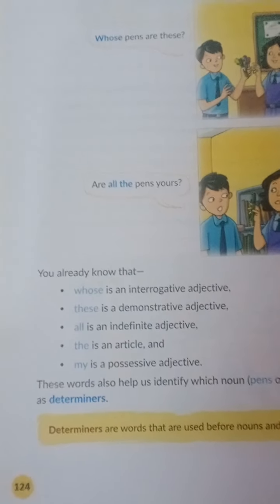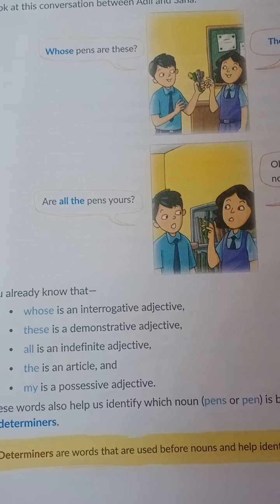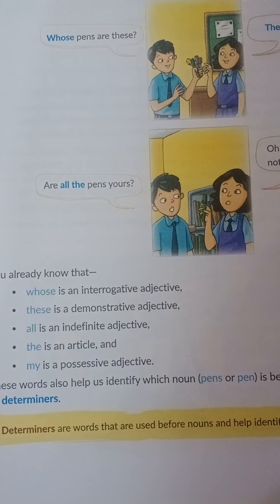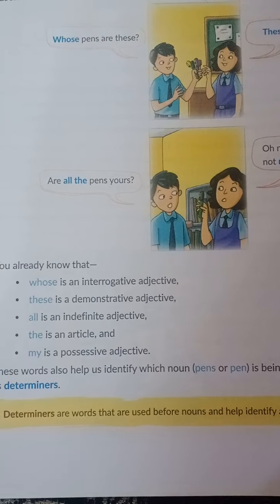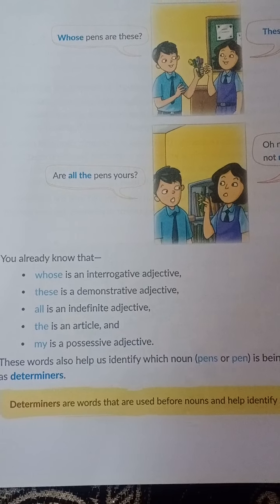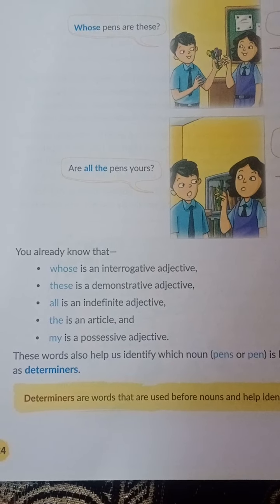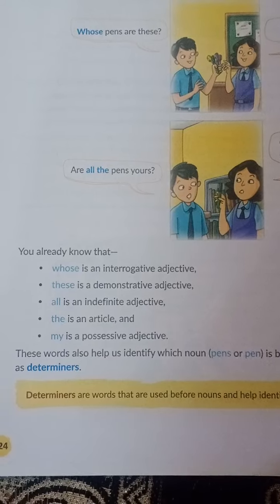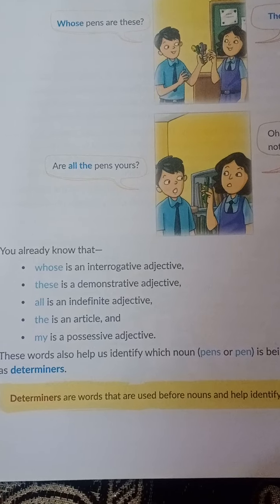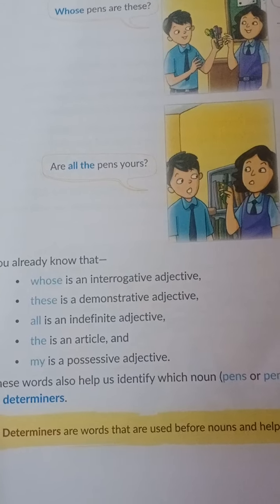My is a possessive adjective. But these words, other than being adjectives, are also performing another function — they are identifying a noun, or you can say they are telling us the quantity of the noun. So when they are identifying or indicating a noun, these words also act as determiners because they determine the noun. Words which identify a noun we can call determiners.